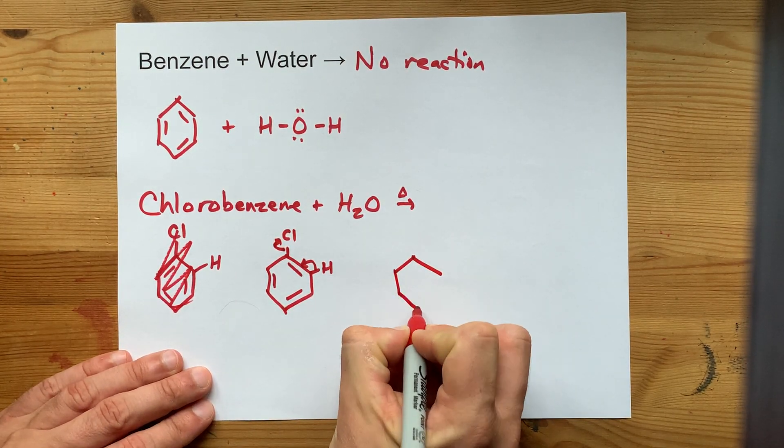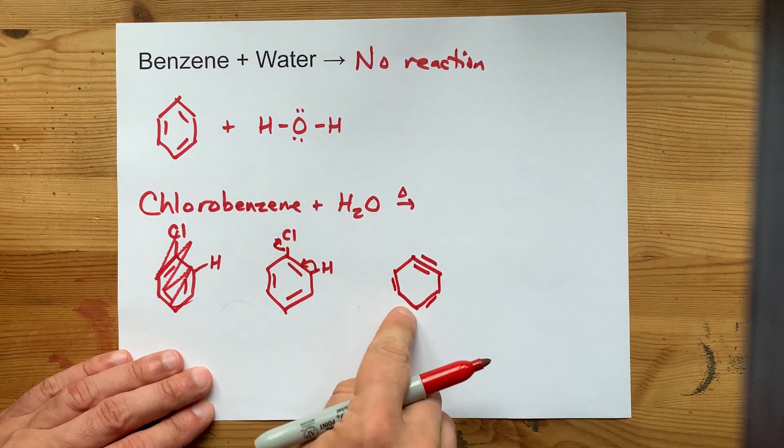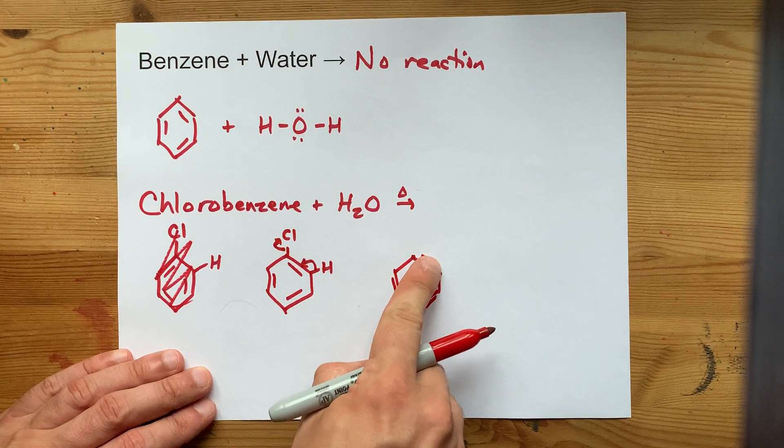You'd end up with something called a benzyne molecule. It's the same as benzene, but one of them has a triple bond.